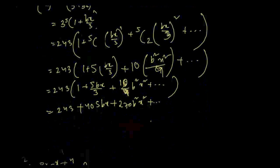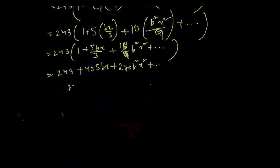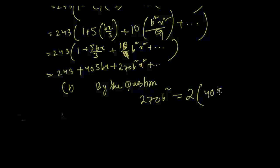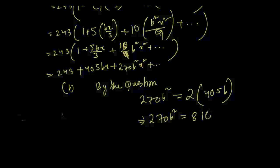Given that in this expansion the coefficient of x² is twice the coefficient of x. The coefficient of x² is 270b² and the coefficient of x is 405b. Setting up the equation: 270b² = 2 × 405b, which gives 270b² = 810b.